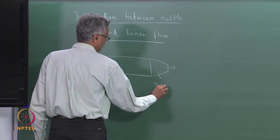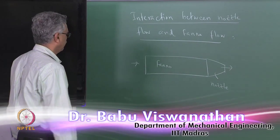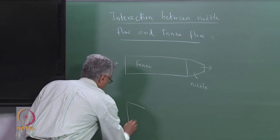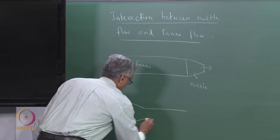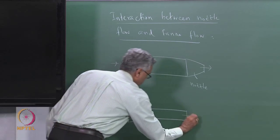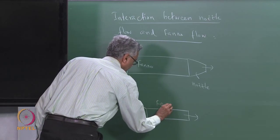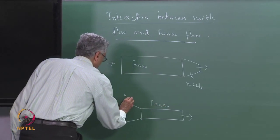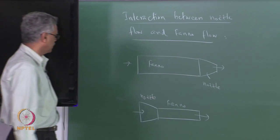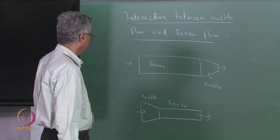We also considered a situation when we had a nozzle which preceded a pipe or duct. So we had Fanno flow in the duct section and isentropic flow in the nozzle. We looked at both these cases in the previous lecture.